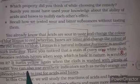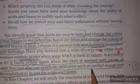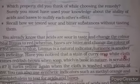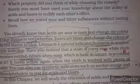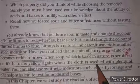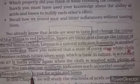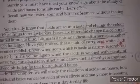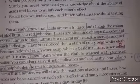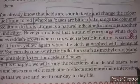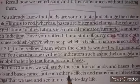You can also use synthetic indicators such as methyl orange and phenolphthalein to test for acids and bases. These are man-made, lab-synthesized indicators used to identify whether a substance is acidic, basic, or neutral. In this chapter we will also study how acids and bases cancel out each other's effect.